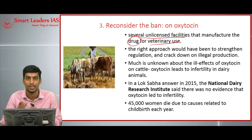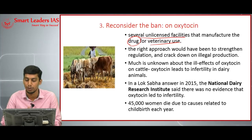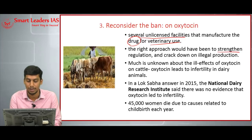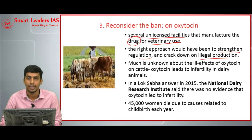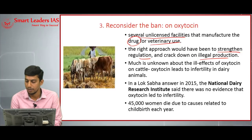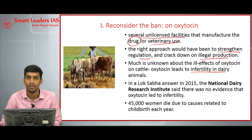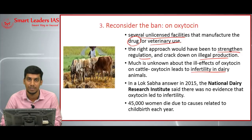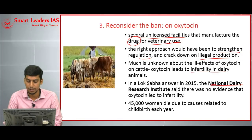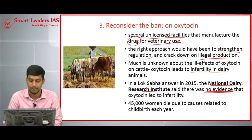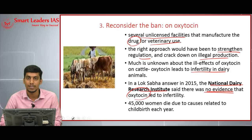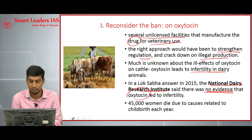On one side, this drug is very useful to women; on the other side, indiscriminate usage is happening. The right approach would have been to strengthen regulation and crack down on illegal production of oxytocin. There is a belief that oxytocin has ill effects like infertility in dairy animals, but it is not based on scientific evidence. In 2015, the National Dairy Research Institute said there was no proper scientific evidence to prove that oxytocin leads to infertility.